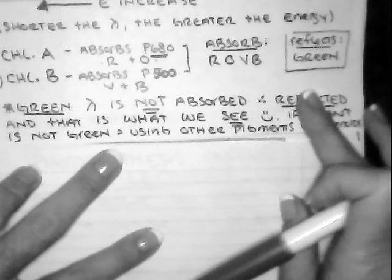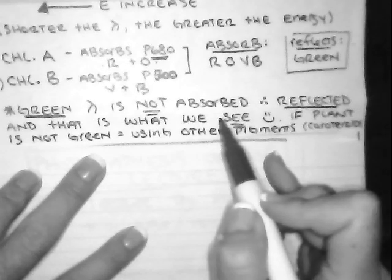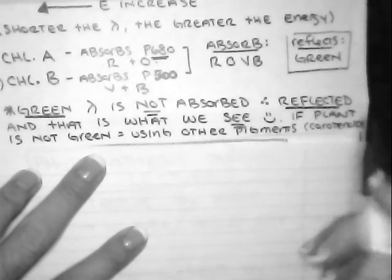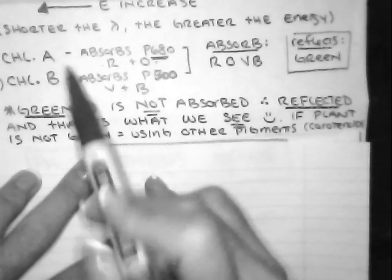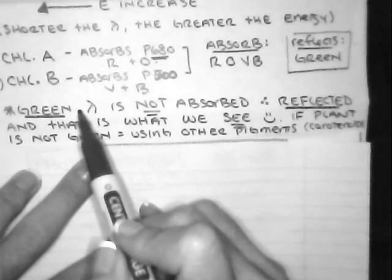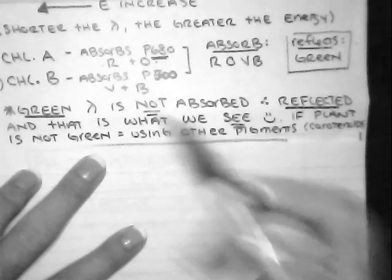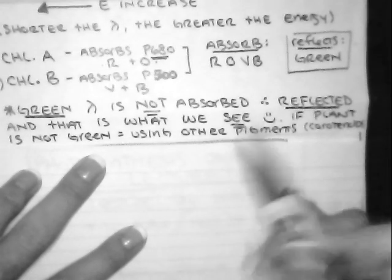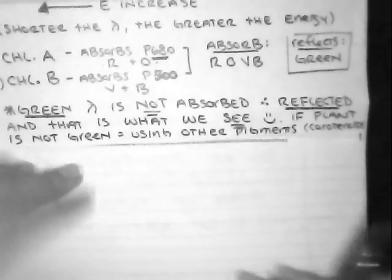Past philosophy here. Green wavelength is not absorbed. This is the biggest thing I need you to understand. Chlorophyll A and chlorophyll B do not like green and therefore that is what is reflected. They do like all the other pigments, including accessory pigments like carotenoids or xanthophylls.